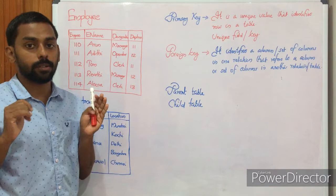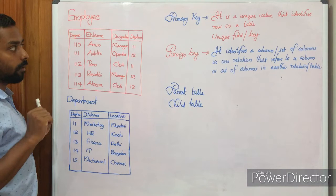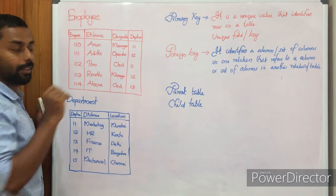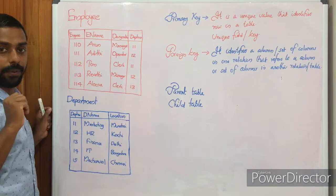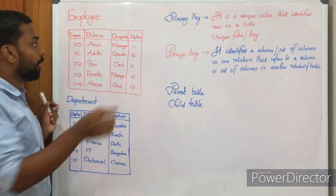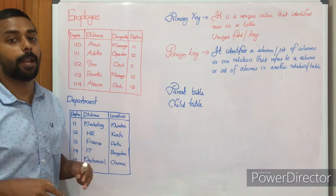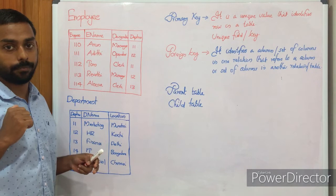Here you can see one common column — a common field in both Employee and Department. That is department number. Department number is a column present in both tables. In the Department table, department number is a key field, but in the Employee table, department number is not the key field — employee number is the key field. So we are going to connect Employee and Department using primary key and foreign key.